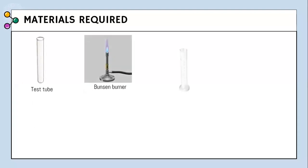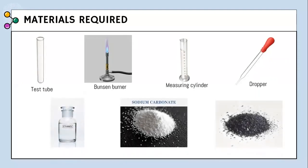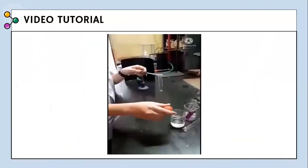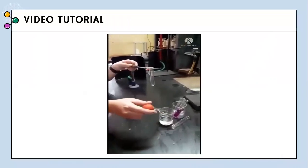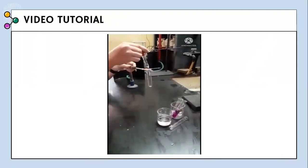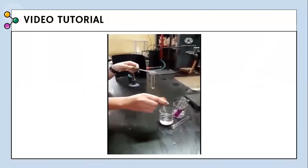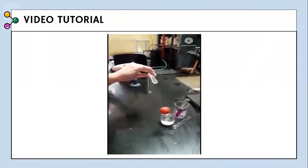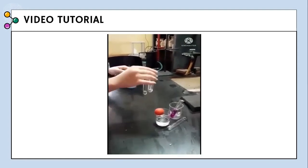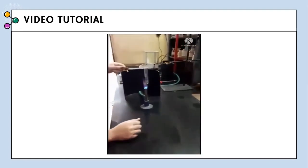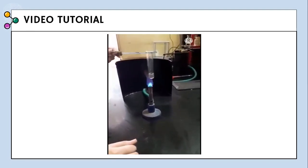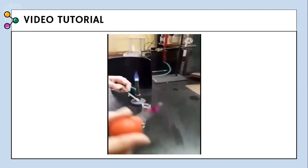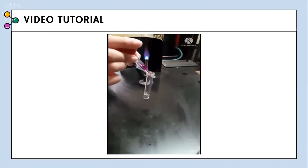Now moving on to the experiment. Materials required in this experiment are a test tube, Bunsen burner, measuring cylinder, a dropper, ethanol, sodium carbonate and potassium permanganate. First, three to four drops of ethanol are added in the test tube. To this, we add a solution of sodium carbonate. Now the mixture is warmed on a Bunsen burner. After this, a dilute solution of potassium permanganate is added drop wise to the solution.